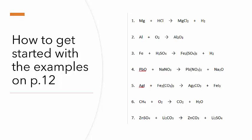In the first example, on the left-hand side we've got one lot of magnesium, and on the right-hand side one lot of magnesium — so that's balanced. On the left-hand side we've only got one lot of H, but on the right we've got two lots of H. So I'm going to put a big 2 in front of HCl, and now the equation is balanced.